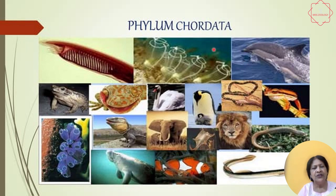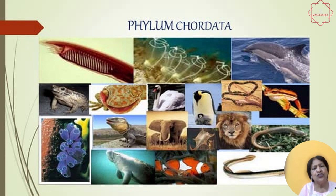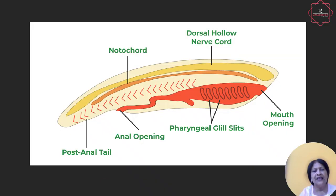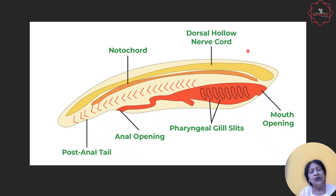It begins with the fishes, then the frogs, then we have the reptiles, then birds, and finally the mammals. What are their body plans that allow us to put them under a single phylum Chordata? All classes of animals under Chordata will have a notochord internally in their body. They will also possess a dorsal tubular nerve cord.